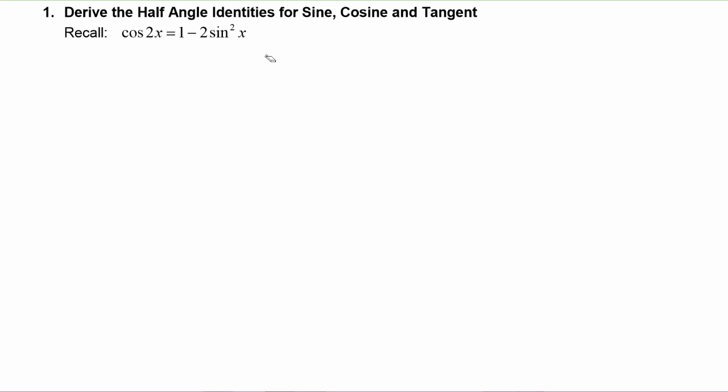You probably remember that the double angle formula for cosine has three different versions. We're going to start off with the one where cosine of two x is equal to one minus two sine squared of x.